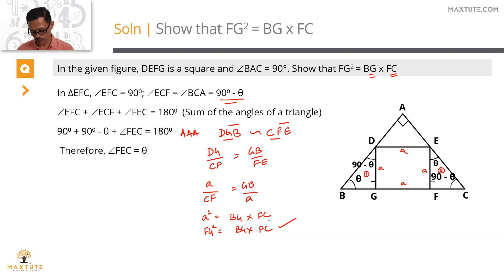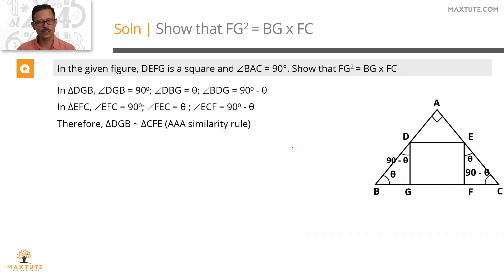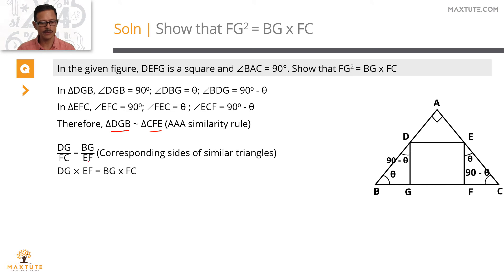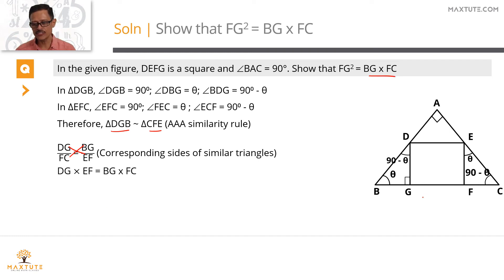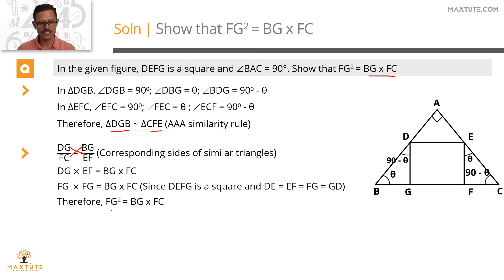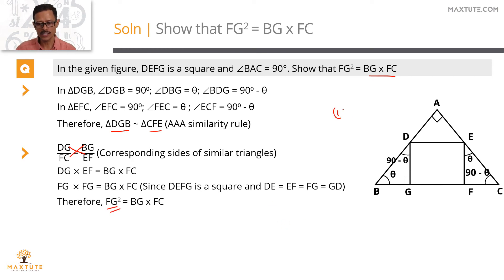To summarize Alternative 1: similarity was established using AAA, giving triangle DGB ~ triangle CFE. Writing proportions: DG/CF = GB/EF. Cross-multiplying: DG × EF = BG × FC. Since DG = EF = FG, we get FG² = BG × FC. Alternative 1 is complete.